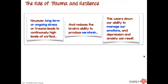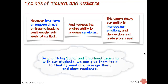Once the danger is gone, our systems go back to normal and we return to our blue brain, thinking logically again. The problem comes when we have long-term or ongoing stress or trauma, leading to continuously high cortisol levels. This also affects the brain's ability to produce serotonin — our mood neurotransmitter. We get little boosts of serotonin from exercise, accomplishing a goal, or even a hug. When our body can't produce serotonin, it affects our ability to manage emotions and can lead to depression and anxiety.